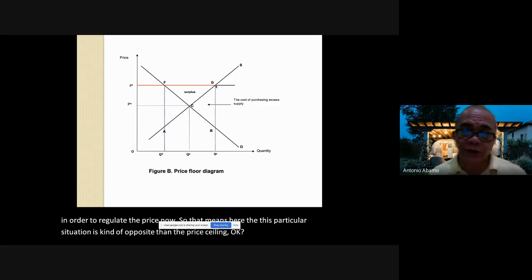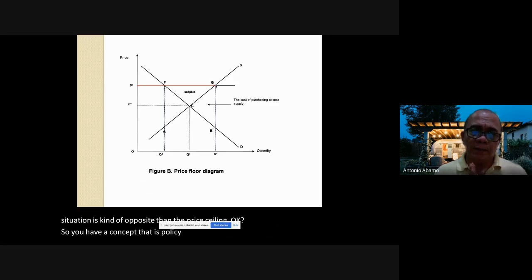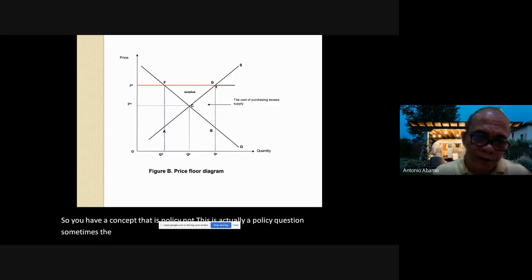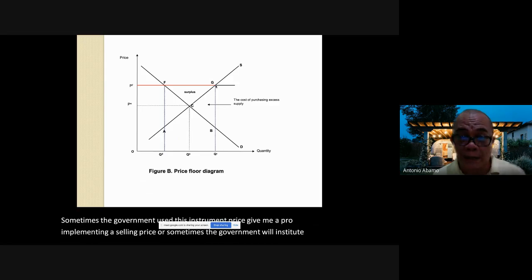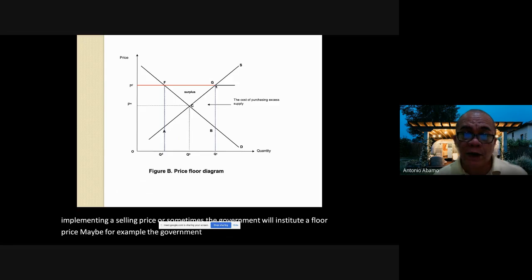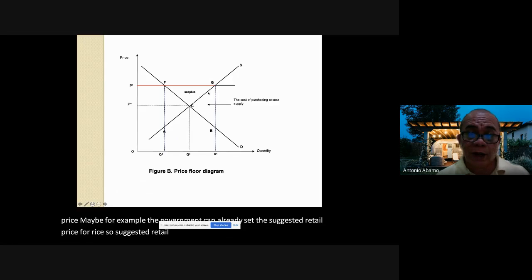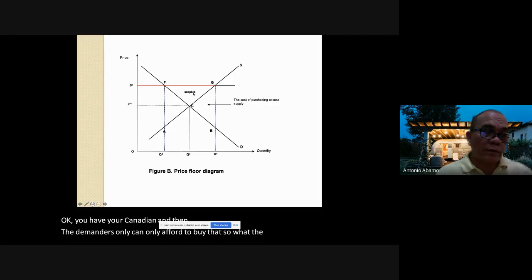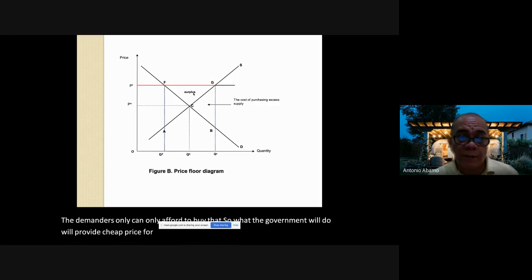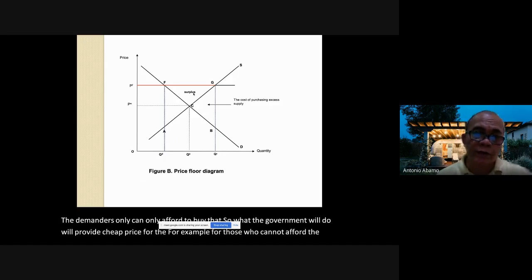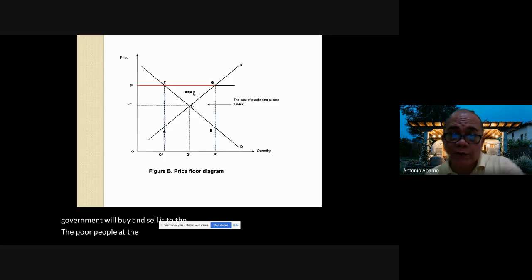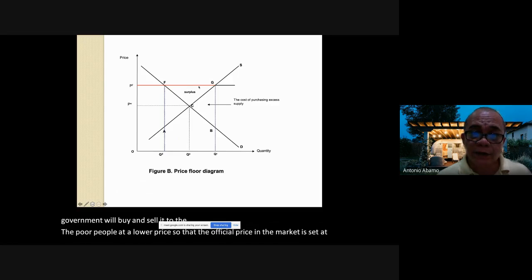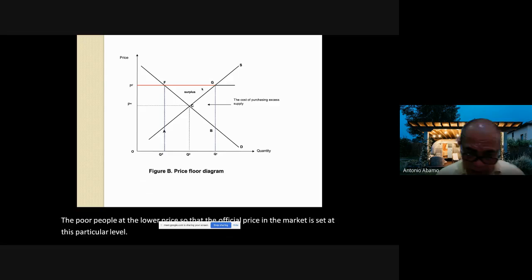Price ceiling and price floor are policy instruments. The government uses them — for example, setting a suggested retail price for rice. The government may buy excess supply at the floor price and sell it to the poor at a lower price, maintaining the official price in the market. This is the interaction between supply and demand using the concept of market equilibrium.